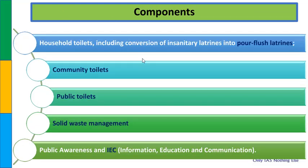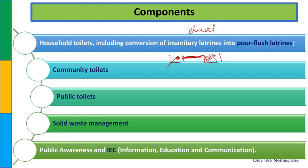इसमें toilets के types में pour flush, latrine जैसे options हैं. Dual pit system भी है जिसमें दो pits बनाए जाते हैं - जब एक pit भर जाता है तो fecal disposal दूसरे tank में collect होने लगता है. इसके basis पर community toilets और public toilets बनाए जाएंगे, solid waste management देखा जाएगा, और public awareness के लिए Information, Education and Communication का भी help लिया जाएगा.